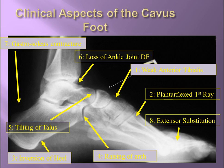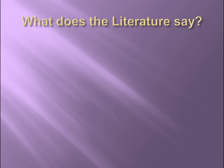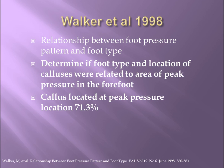So now we've got a definition. We know the biomechanical problems and a mechanical etiology for the pes cavus foot morphology. So what does the literature say? I picked four papers to review with you. This first 1998 article looked at the relationship between foot pressure pattern and foot type. They wanted to determine if foot type and location of calluses were related to the area of peak pressure in the forefoot, and they found calluses located at the peak pressure location in over 70% of feet. This could be very valuable information in orthotic prescription writing in our neuropathic patients where we need to offload areas in ulcer prevention.